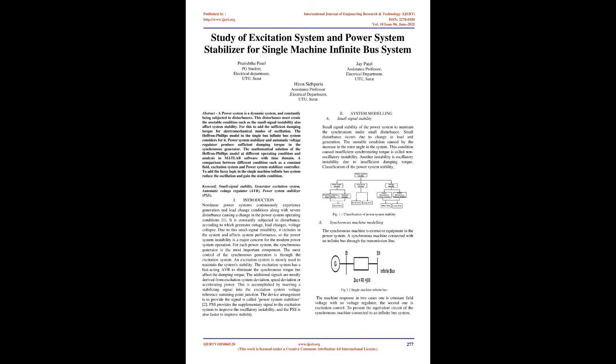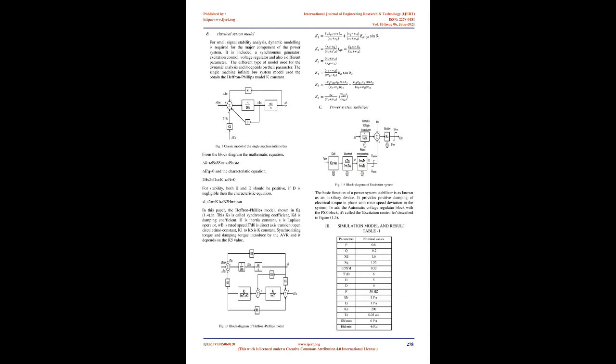Classification of the Power System Stability, Fig 1.1. Asynchronous Machine Modeling: the synchronous machine is extensive equipment in the power system. A synchronous machine connected with an infinite bus through the transmission line, Fig 1.2 Single Machine Infinite Bus. The machine response in two cases: one is constant field voltage with no voltage regulator, the second one is excitation control. To present the equivalent circuit of the synchronous machine connected to an infinite bus system.